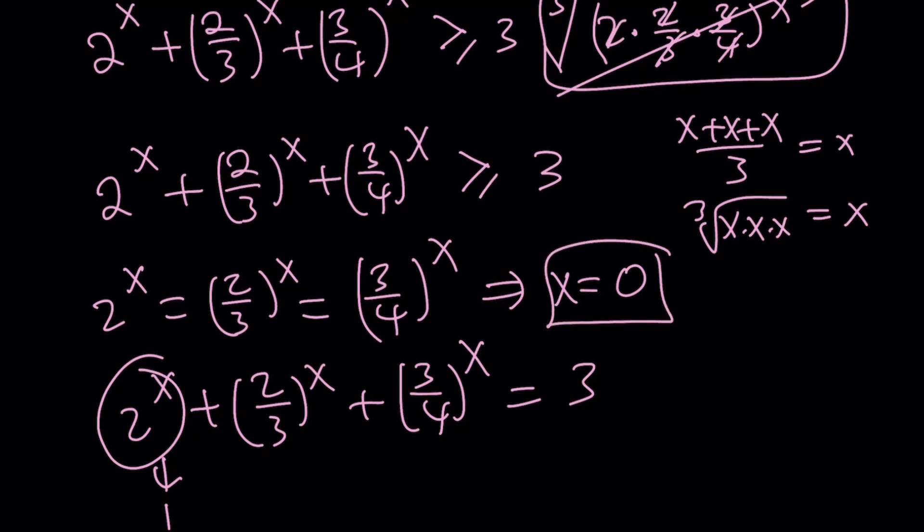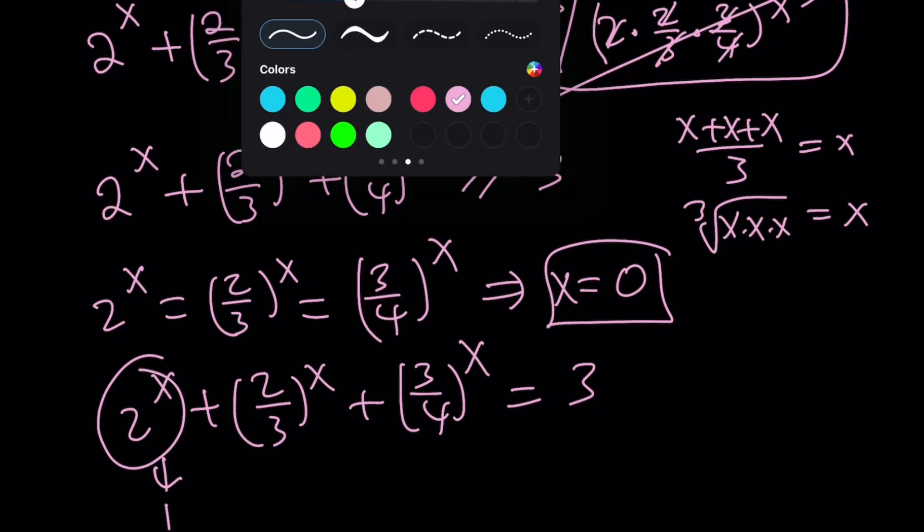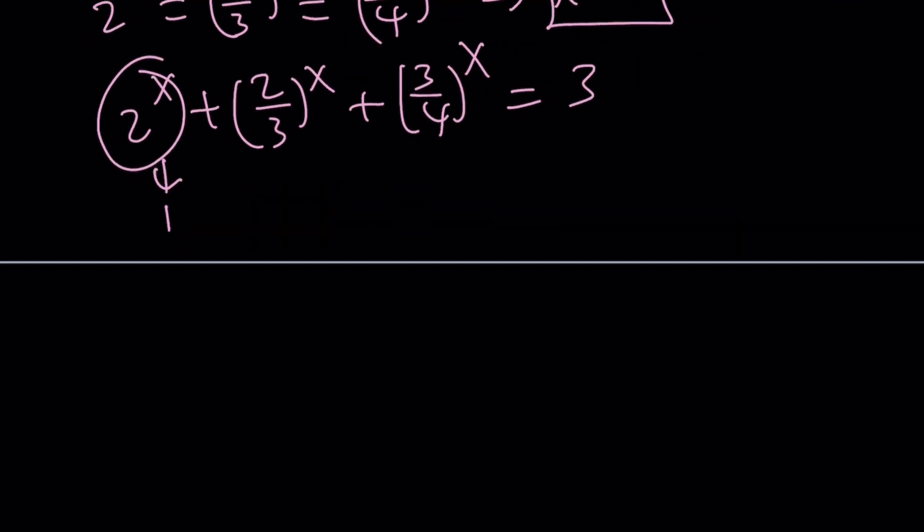Is that the only solution? Let's see. So far we got something good, but let's use some calculus, shall we? So here's what we're going to do. f(x) can be written as 2^x + (2/3)^x + (3/4)^x. So I'm defining f(x) to be this one.